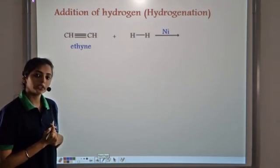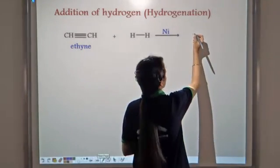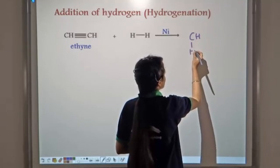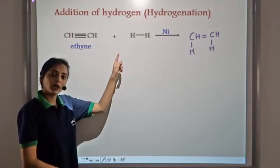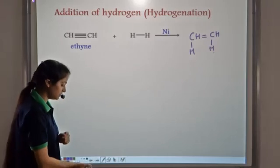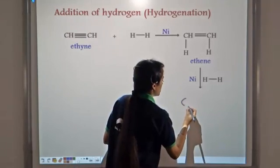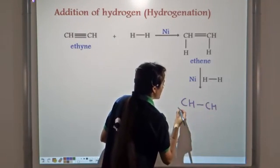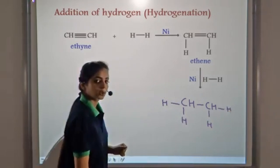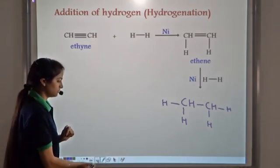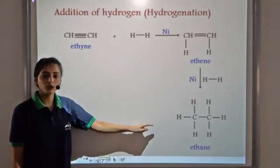Let's take the hydrogenation of ethyne. The triple bond first breaks into a double bond, so from ethyne we get ethene in the first step. In the second step, ethene reacts further with hydrogen and the double bond breaks into a single bond, giving us ethane. So the hydrogenation of ethyne first gives ethene, and then ethene is converted into ethane.